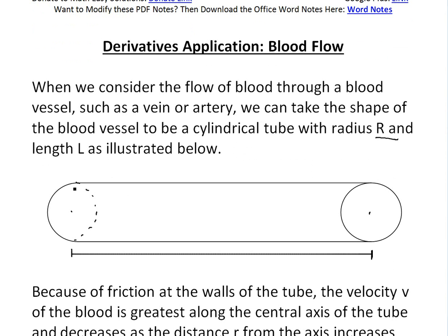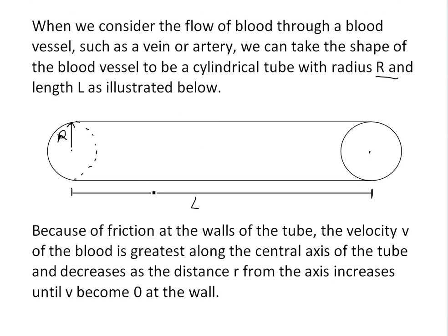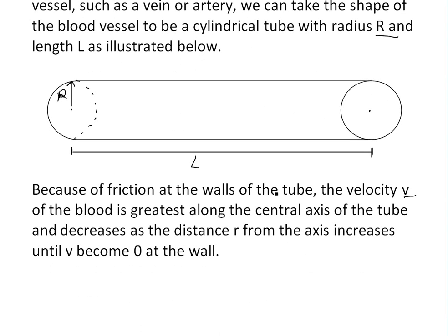The radius, capital R, is from the center, and L is the length of this tube. Because of friction at the walls of the tube, the velocity V of the blood is greatest along the central axis and decreases as distance r from the axis increases until V becomes zero at the wall.